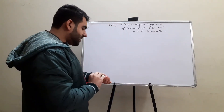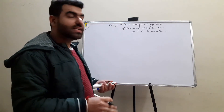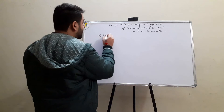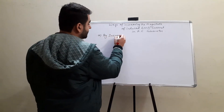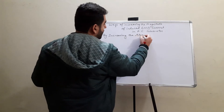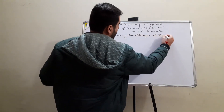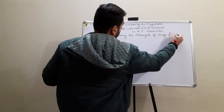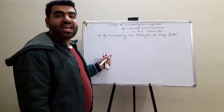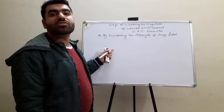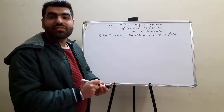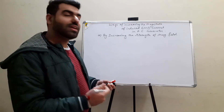The concept is pretty much the same as what we have discussed in DC motor. The first method is by increasing the strength of the magnetic field. If the magnetic field increases, the change in magnetic flux will also increase, and if the change is increased, then the amount of EMF produced is also increased.